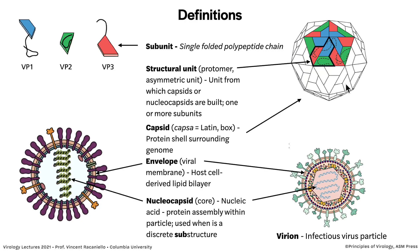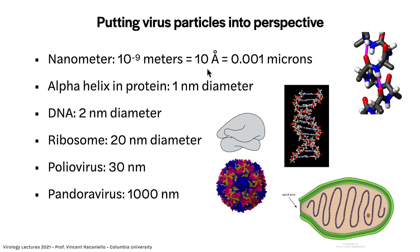A little about dimensions: we're dealing with very small particles. Ten angstroms is 10⁻⁹ meters. We'll talk about angstroms, equivalent to 0.001 microns. For reference: the alpha helix in a protein is about 1 nanometer in diameter; double-stranded DNA is about 2 nanometers; a ribosome is 20 nanometers; poliovirus is 30 nanometers; and the biggest giant viruses are 1,000 nanometers — a micron.